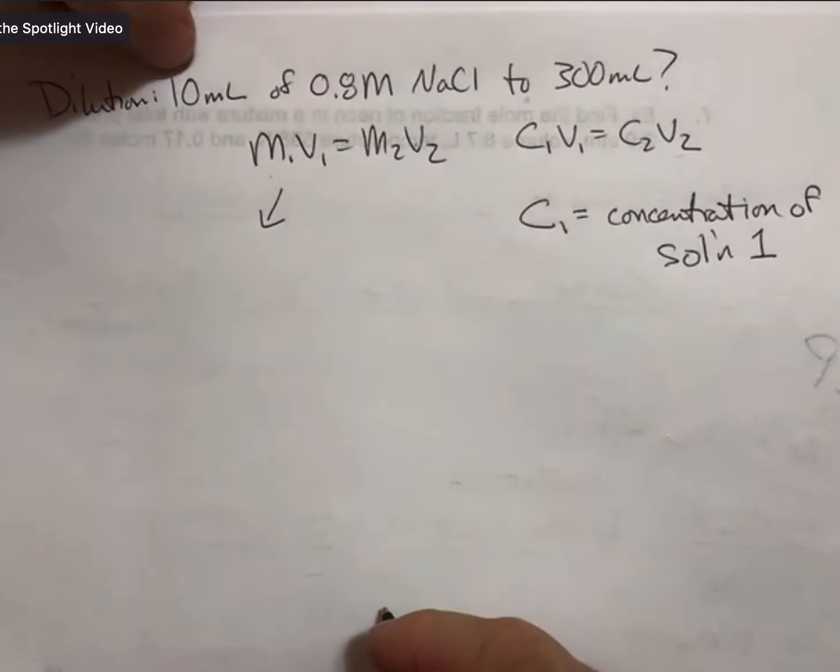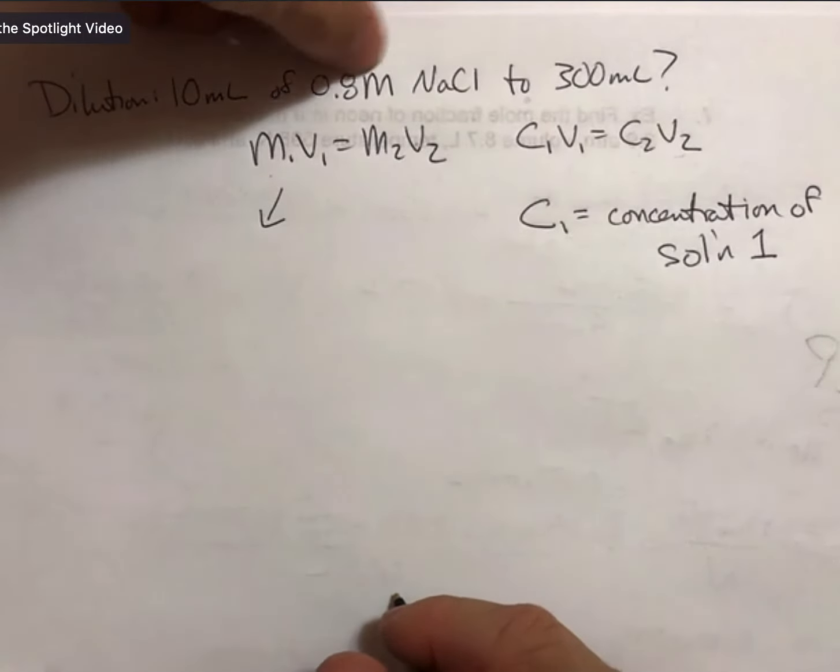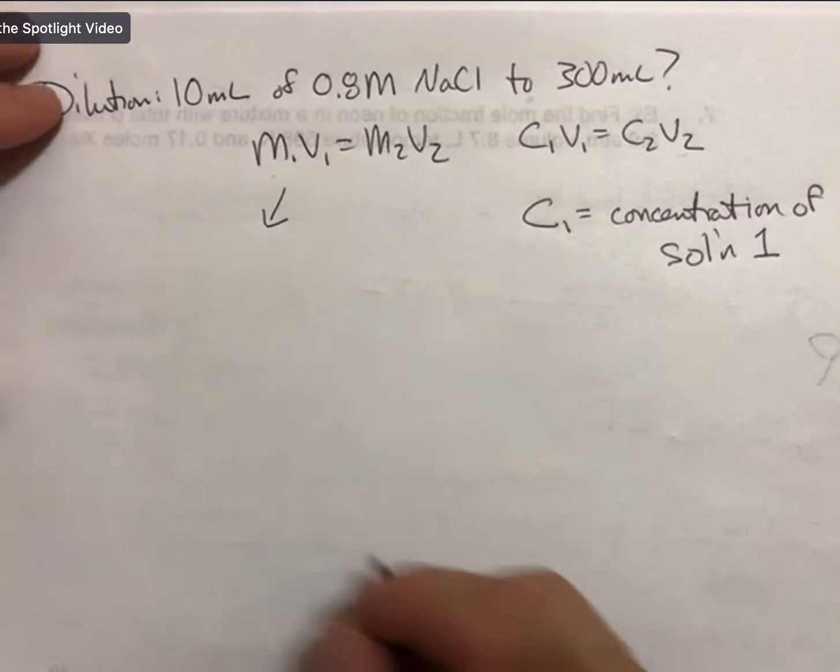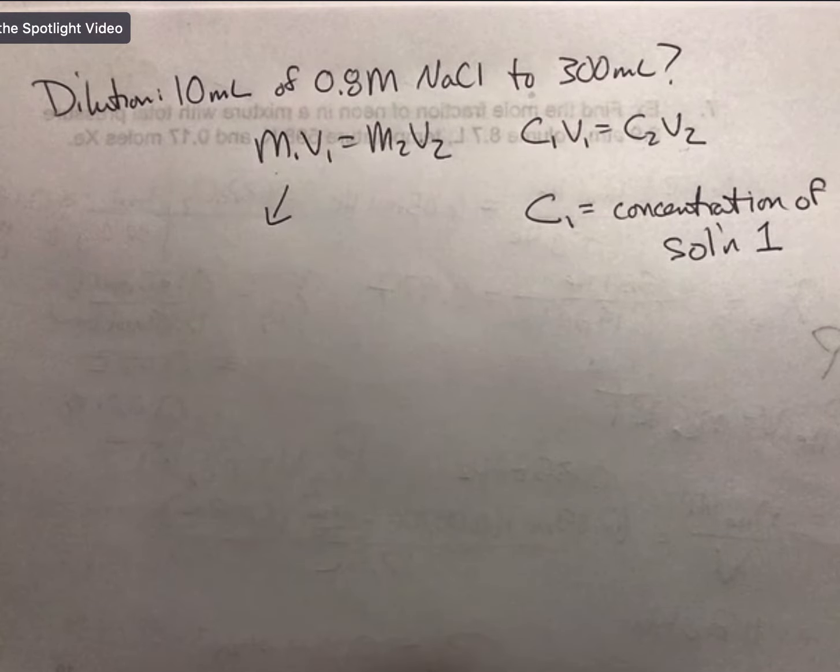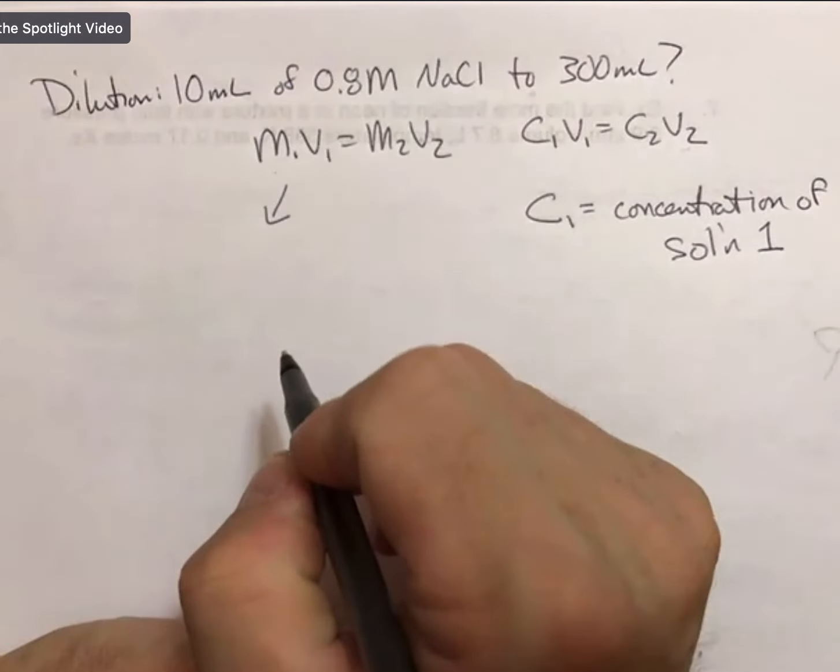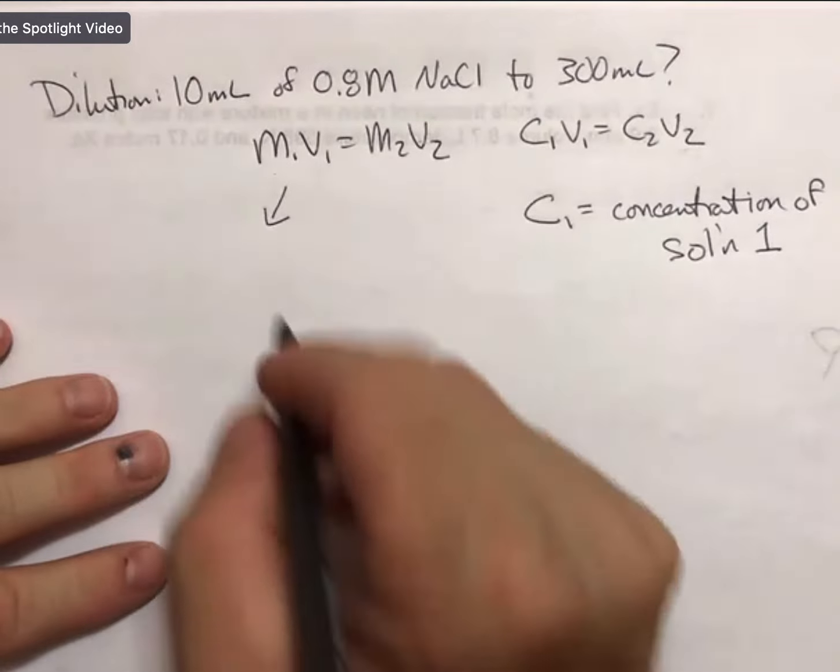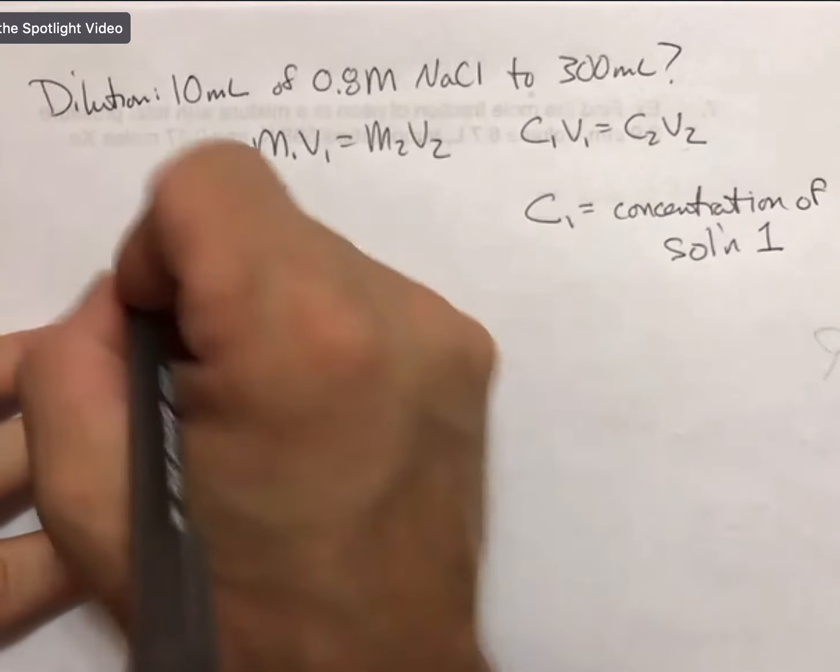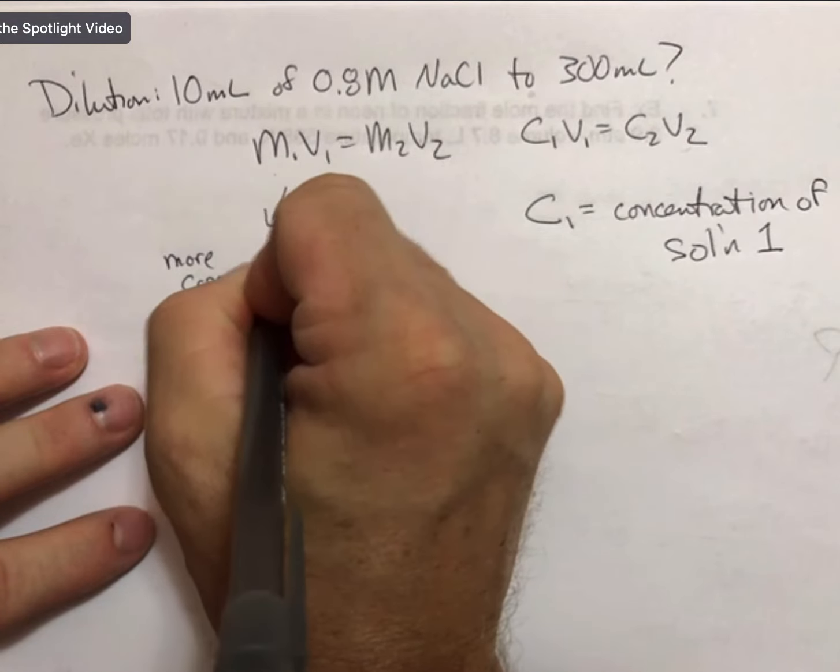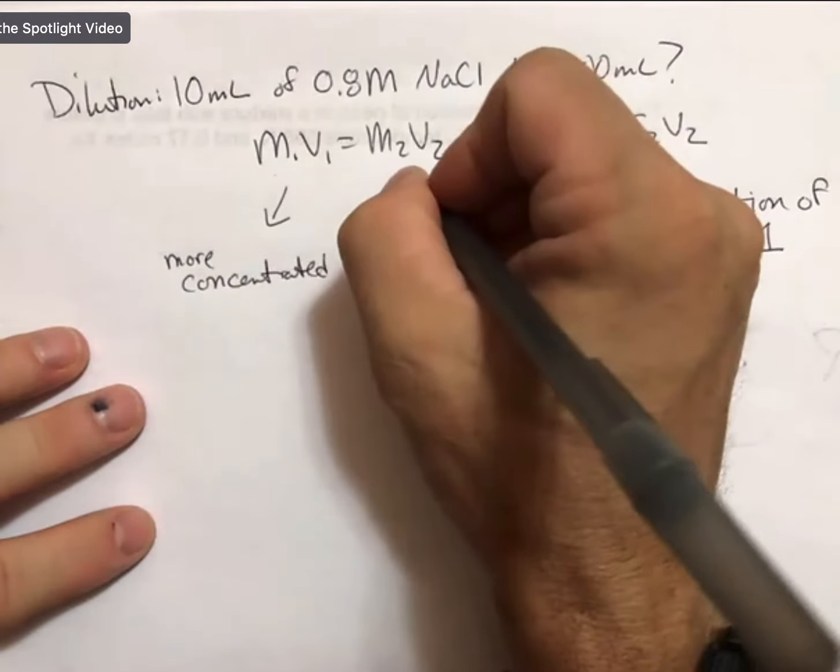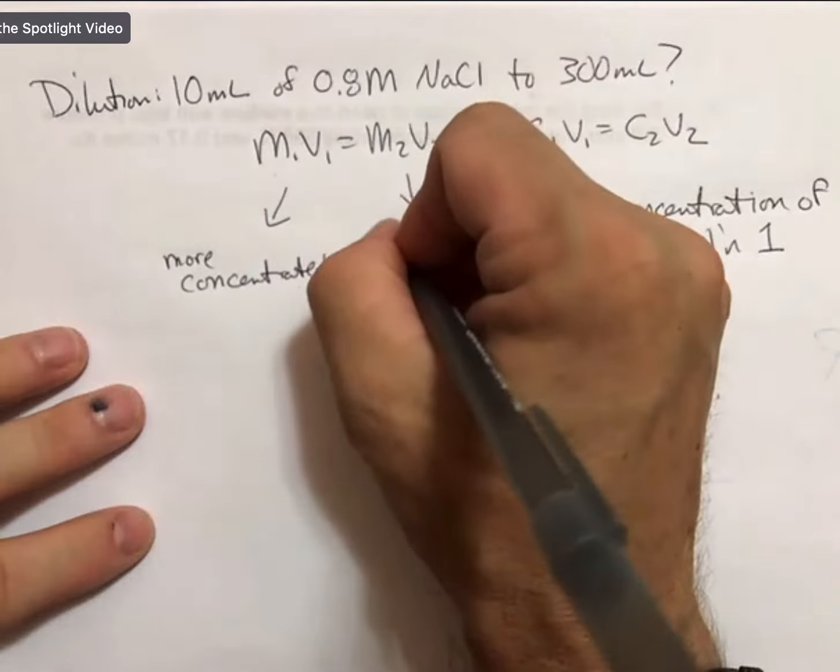Now, I'm starting with 10 milliliters of 0.8 molar sodium chloride. 'Of' in math and chemistry means multiply by, and we will be multiplying these two numbers. How I stay organized for this is my M1 and my V1 are my more concentrated.